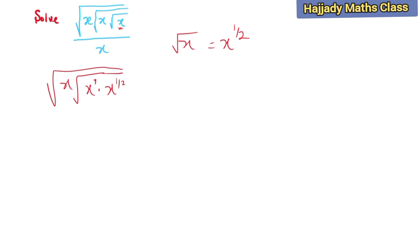So here we are going to have square root of x, square root of x raised to power 3/2. So the same law will be applied to this, so we are having square root of x multiplied by x raised to power 3/2, raised to power 1/2, all over x.